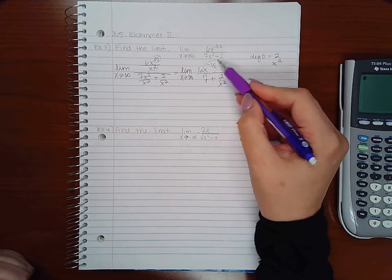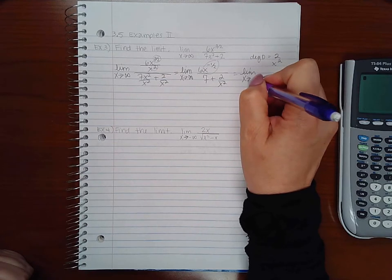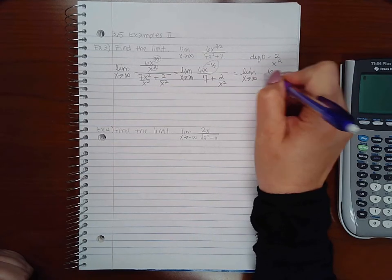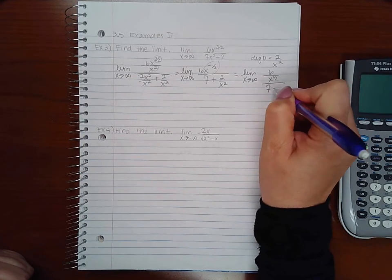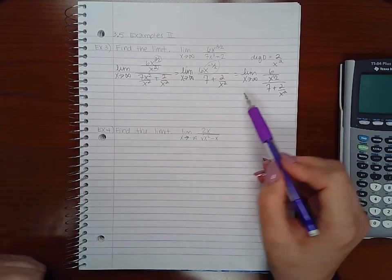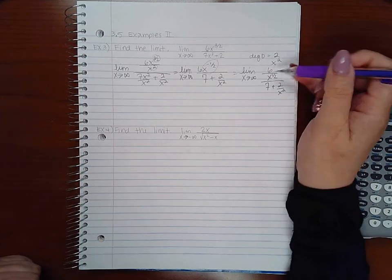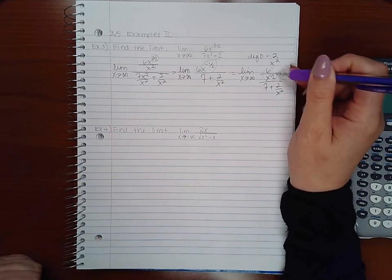And then this will just reduce to 7, and you still have 2 over x squared. Now this has to be written as a fraction. You cannot leave it as a negative exponent. So this becomes 6 over x to the 1 half, over 7 plus 2 over x squared. Now remember, as x goes to infinity...